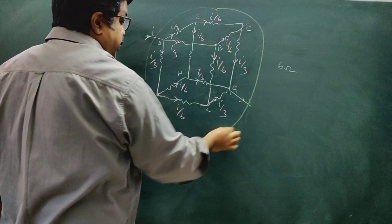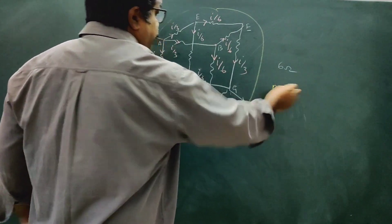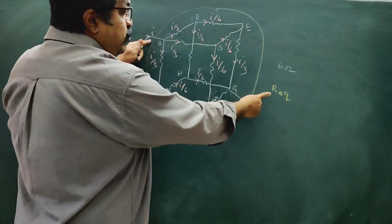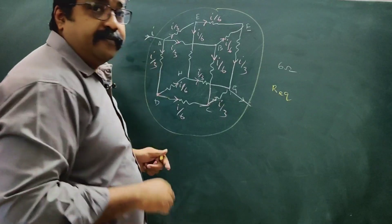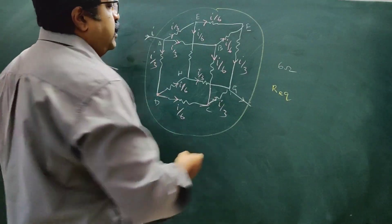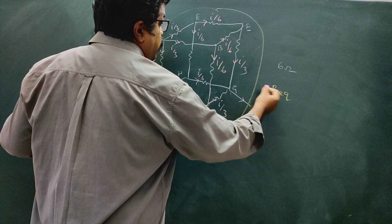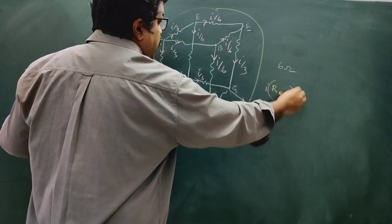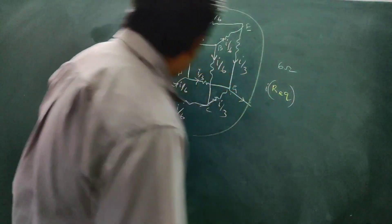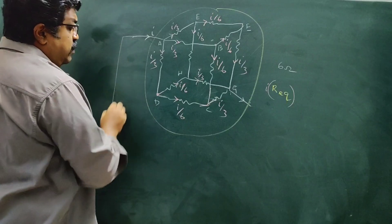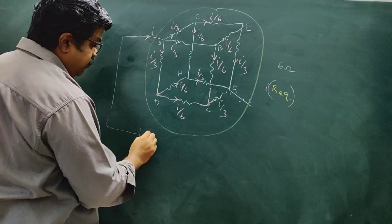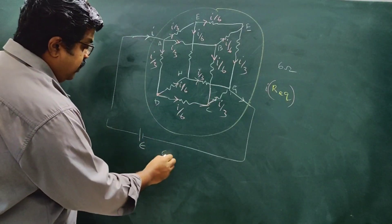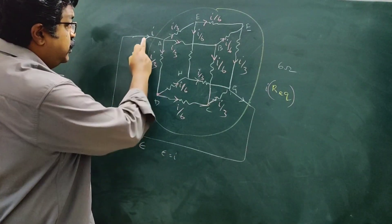We have equivalent resistance R equivalent. We connect the cell with EMF E. So E is equal to I into R equivalent. We need to apply Kirchhoff's voltage law. We traverse the circuit using Kirchhoff's rule.